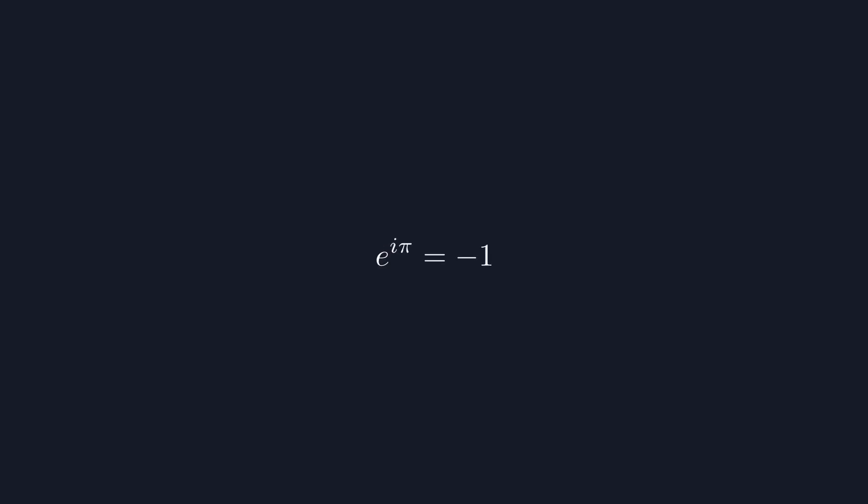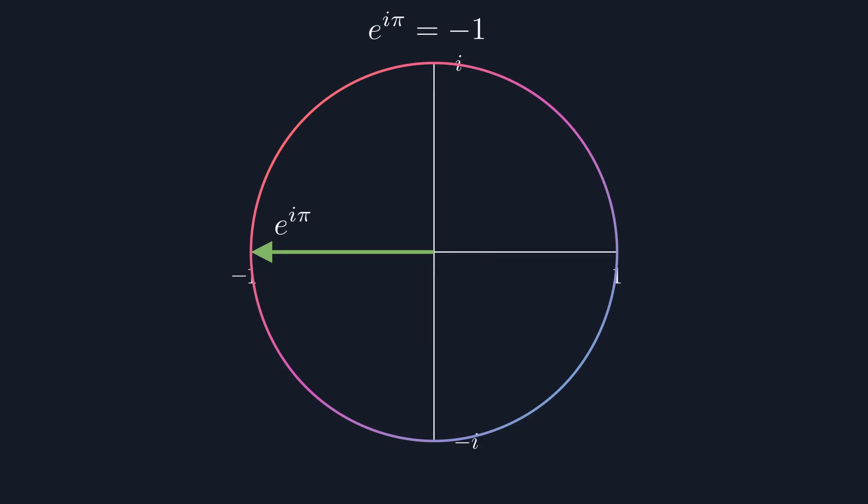e to the i pi equals negative 1 is widely viewed as one of mathematics most beautiful formulas. The reasoning for this is typically the amount of interesting numbers that it contains, but this formula can only be truly appreciated if you understand where the formula comes from. That's what this video is about.